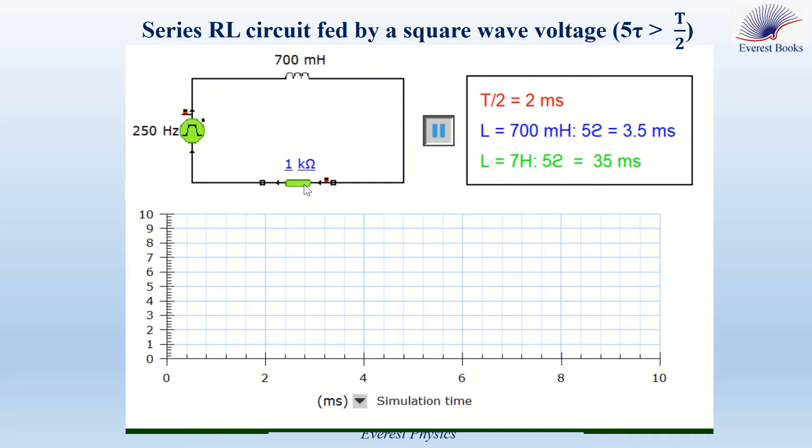The resistance of the resistor is R = 1 kΩ. This experimental simulation studies two cases referring to the values of L. First case: L = 700 mH, then 5τ = 5L/R = 3.5 ms.